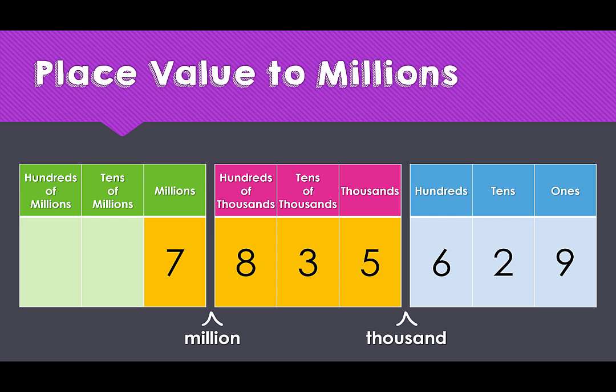And then finally, our last set of three digits: six hundred and twenty-nine. So again, we would say seven million, eight hundred and thirty-five thousand, six hundred and twenty-nine.